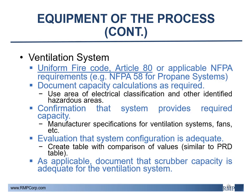Ventilation system design requirements are based on the Uniform Fire Code Article 80, or there may be specific NFPA requirements based on the process, like NFPA 58 for propane systems. Capacity calculations should be documented using the areas of electrical classification or other identified hazard areas. The chosen ventilation system and its available capacity should be documented based on manufacturer specifications, and the documentation should include an evaluation of whether the system configuration is adequate. A table can be added with comparison of actual requirements and design capabilities, similar to the pressure relief device table. Scrubber capacities connected to the ventilation system should also be documented as applicable.